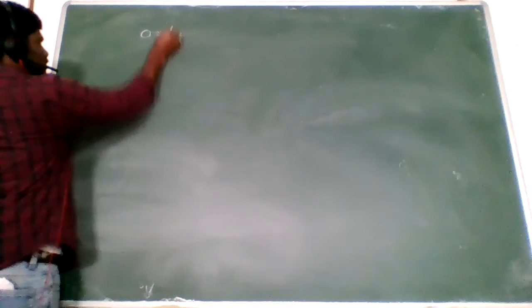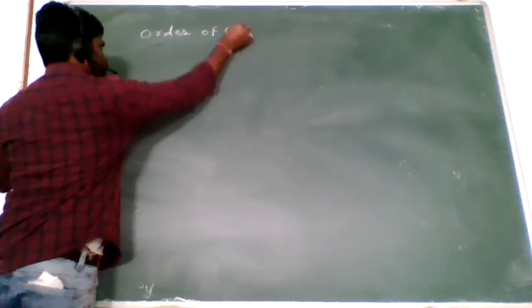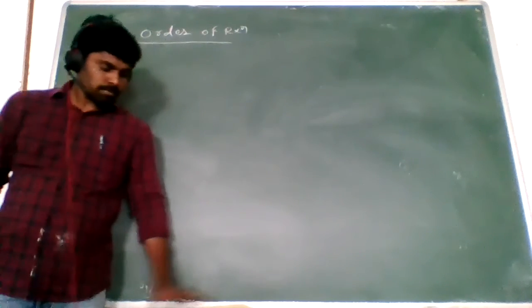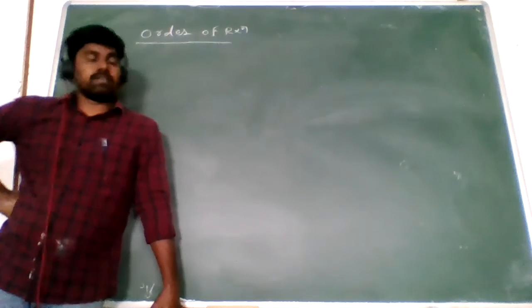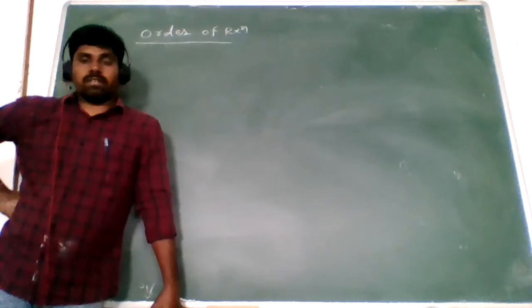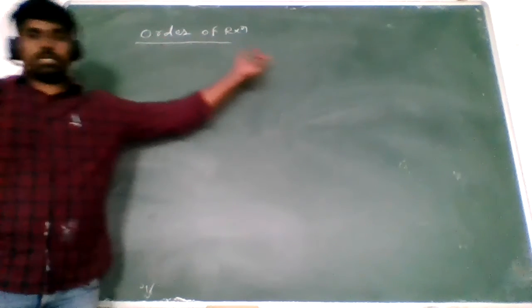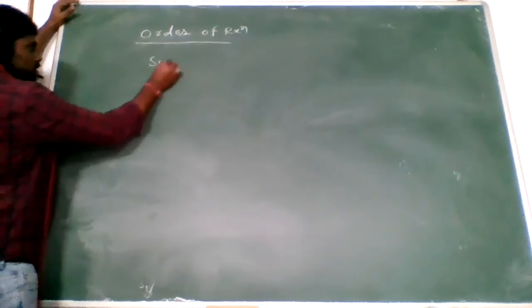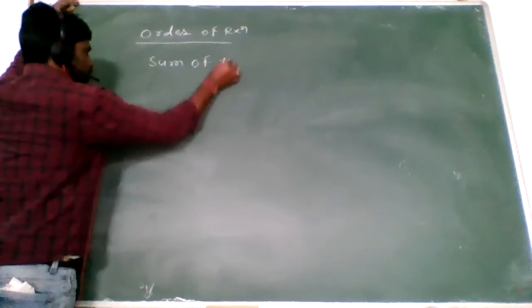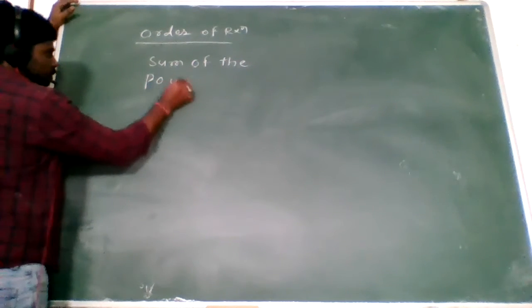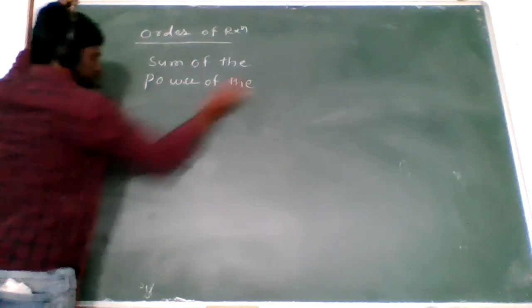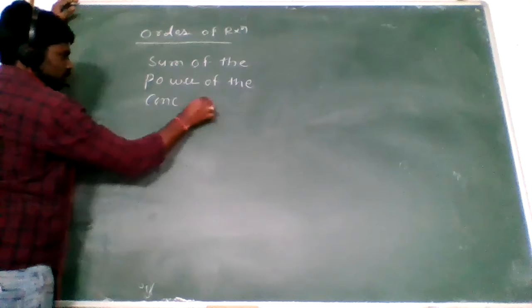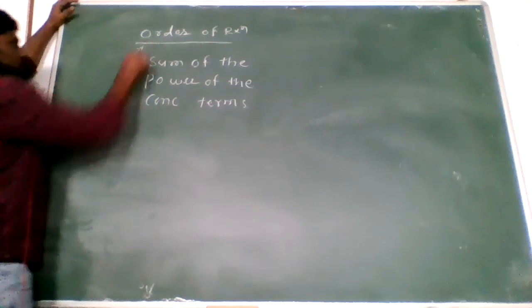Next one: order of reaction. What is order? Order of reaction means the sum of the powers of the concentration terms. That sum of the powers of the concentration terms is called the order of reaction.